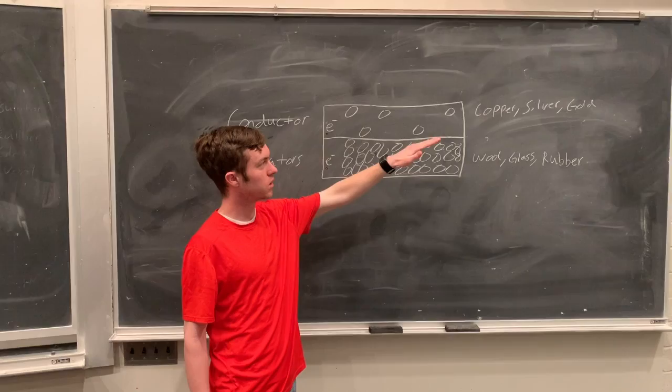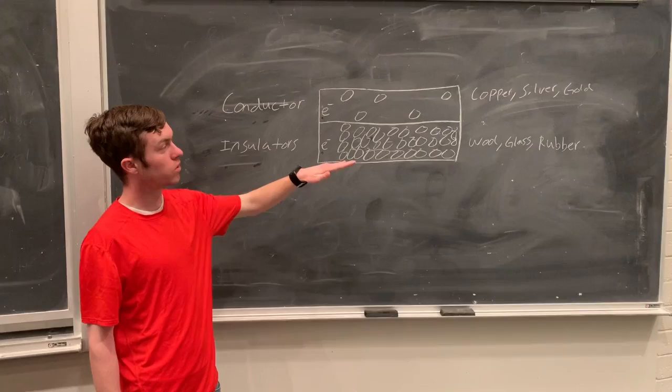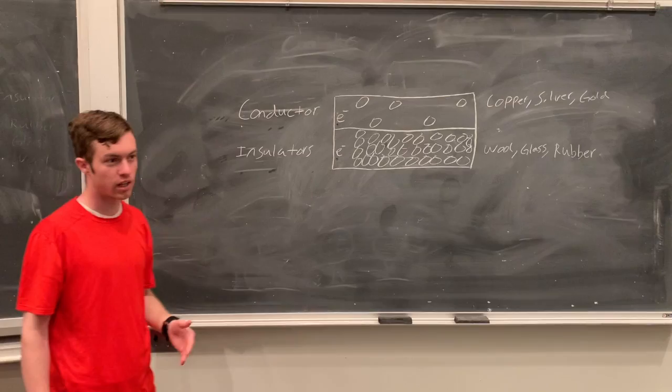So examples of a good conductor are metals such as copper, silver, and gold. Examples of good insulators are things like wool, glass, and rubber.